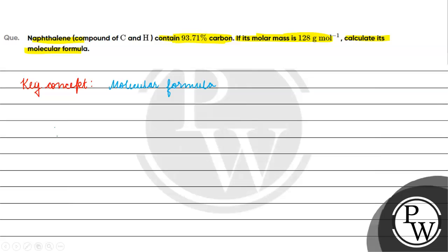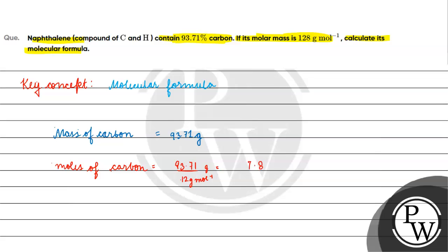If the mass of the compound is 100 grams, and carbon is 93.71%, the mass of carbon will be equal to 93.71% of 100 grams, which is 93.71 grams. The number of moles of carbon will be 93.71 divided by 12 grams per mole, which equals 7.8 moles.